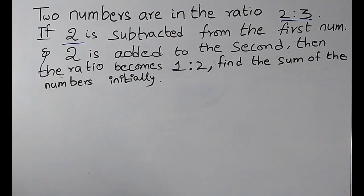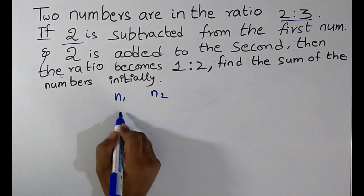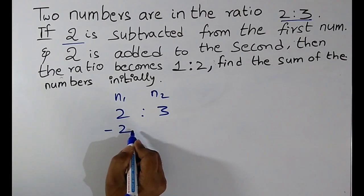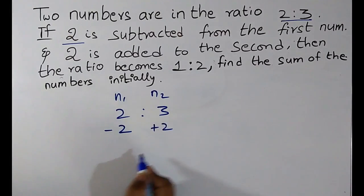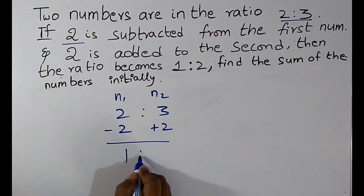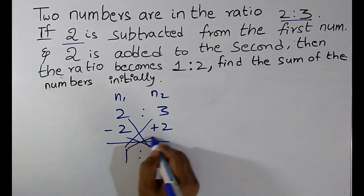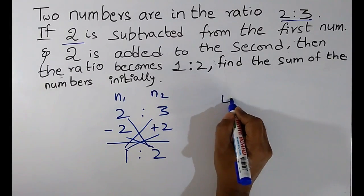Let us see another problem. Two numbers are in the ratio 2:3. If 2 is subtracted from the first number and 2 is added to the second number, then the ratio becomes 1:2. Find the sum of the numbers initially. There are two numbers in the ratio 2:3; after the operations, the ratio becomes 1:2.